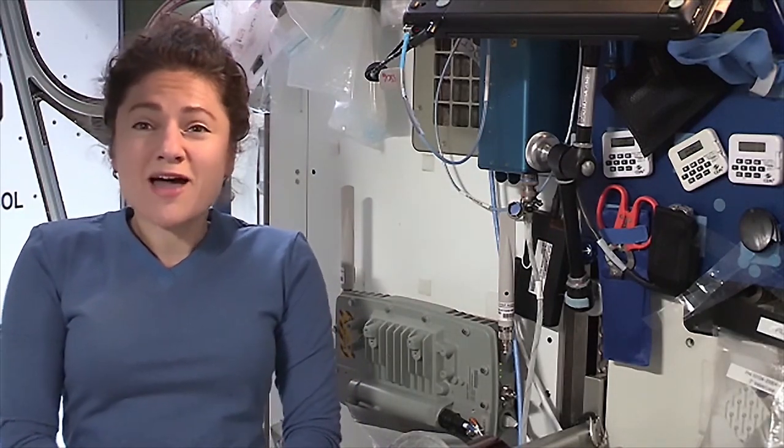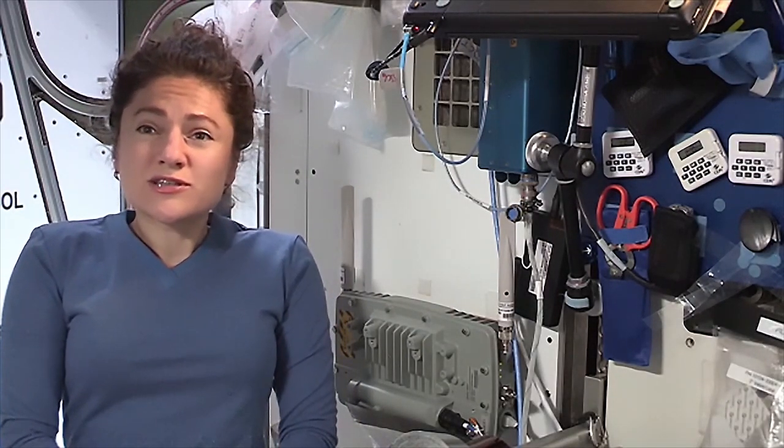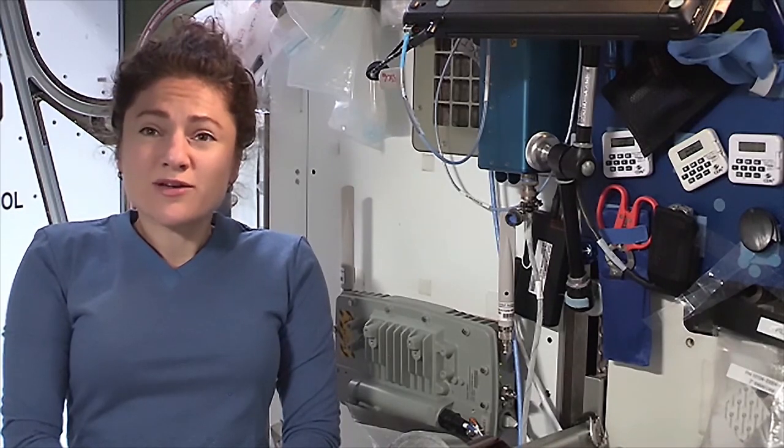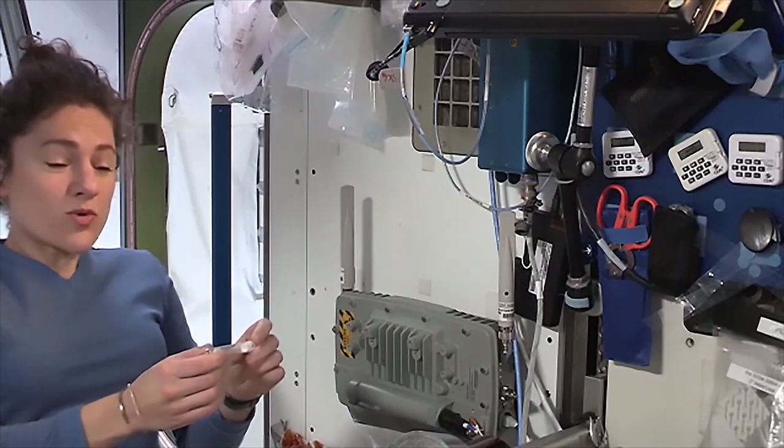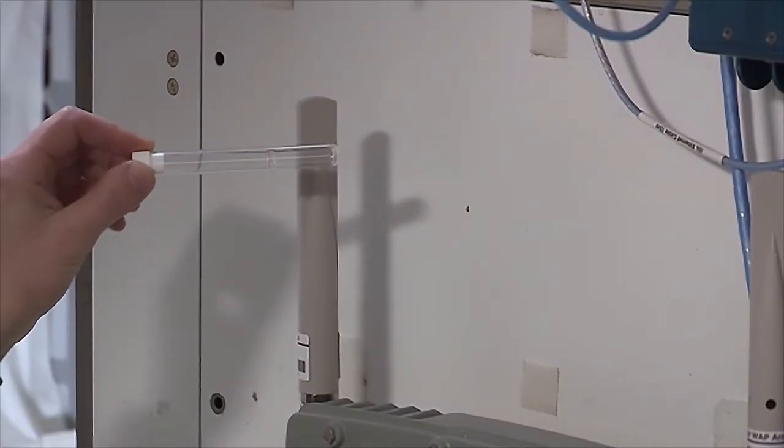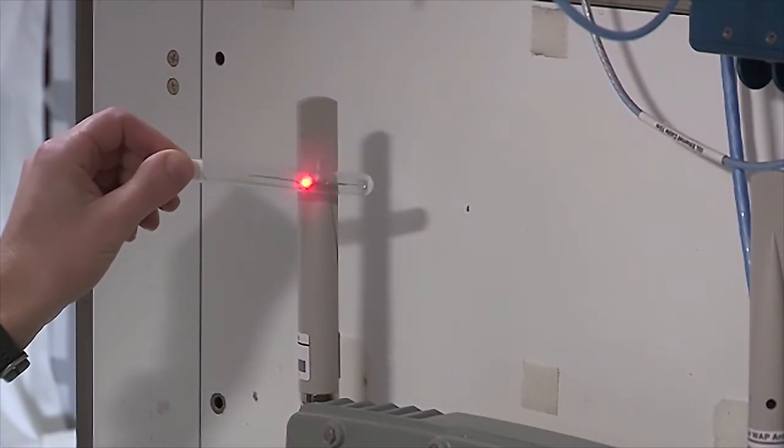On board the ISS, we have Wi-Fi, just like you might have at home. Wi-Fi uses electromagnetic waves in the microwave frequency range. Now if we put the LECTENNA nearby the Wi-Fi source, it lights up.